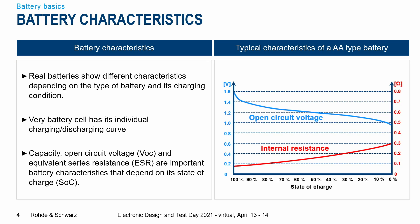Furthermore, there is a discharge and a charging curve to every battery. This curve is very individual for each battery cell. It shows the open circuit voltage over the state of charge. We can see that in the beginning, when the battery is fully charged, the open circuit voltage is quite high. Here we start with an AA type battery that starts at 1.6 volts, and during discharging we end up somewhere just below 1.2 volts when it's completely discharged.